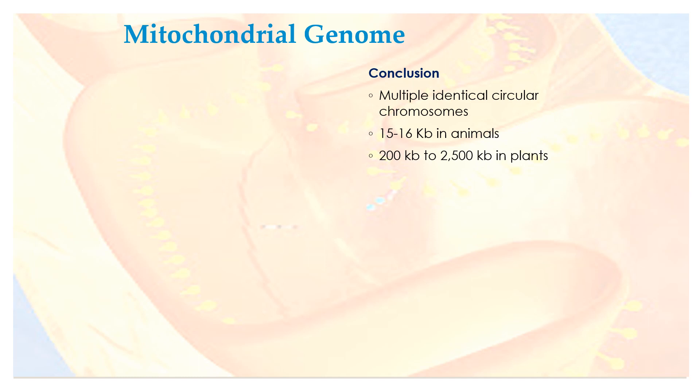In conclusion, mitochondrial genomes consist of multiple identical circular chromosomes: 15 to 16 KB in animals, and 200 KB to 2,500 KB in plants.